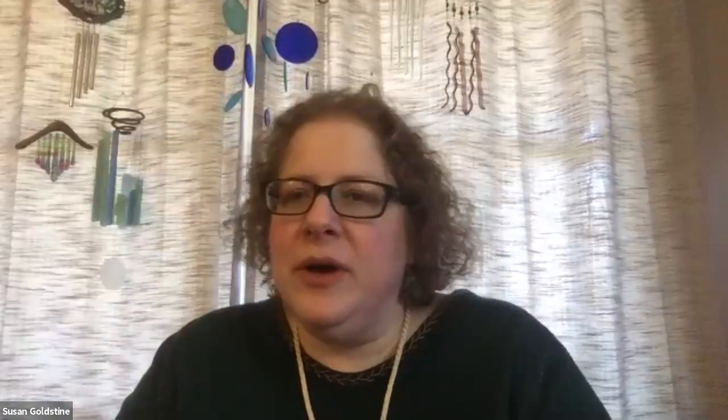This is only one scenario where you would need five colors; you'd still have to rule out more complicated maps. This is not going to prove the four color theorem, but it gives a little idea of how you approach these questions. We would have five countries and each has to touch the other four, so each has four edges. For reference, I'll call the countries A, B, C, D, and G. So five faces, each with four edges.